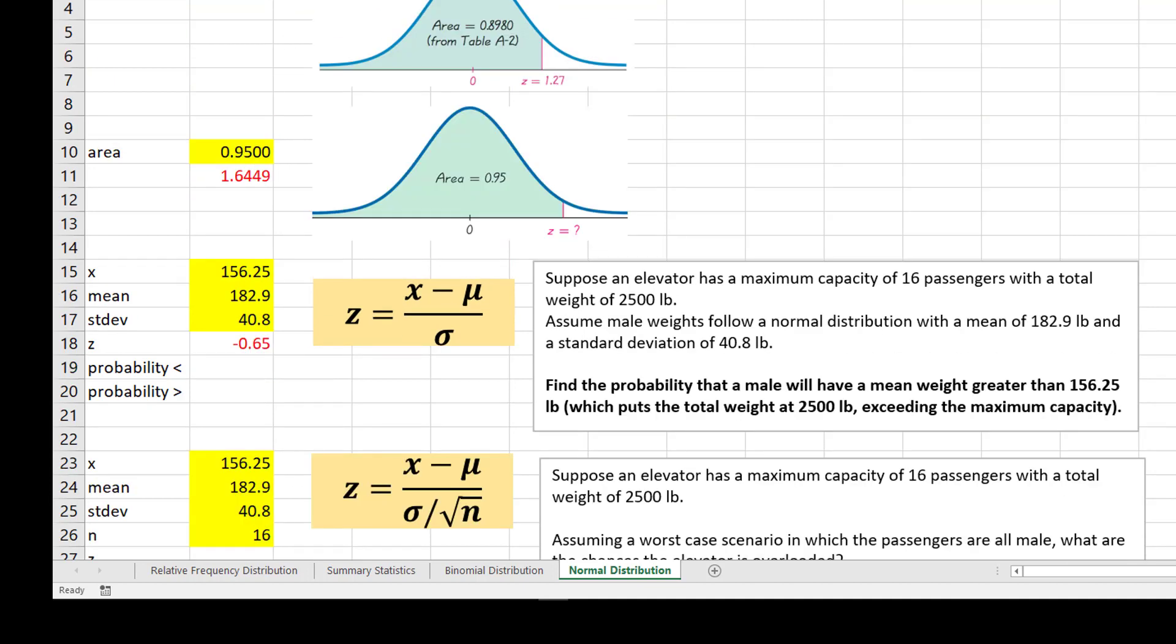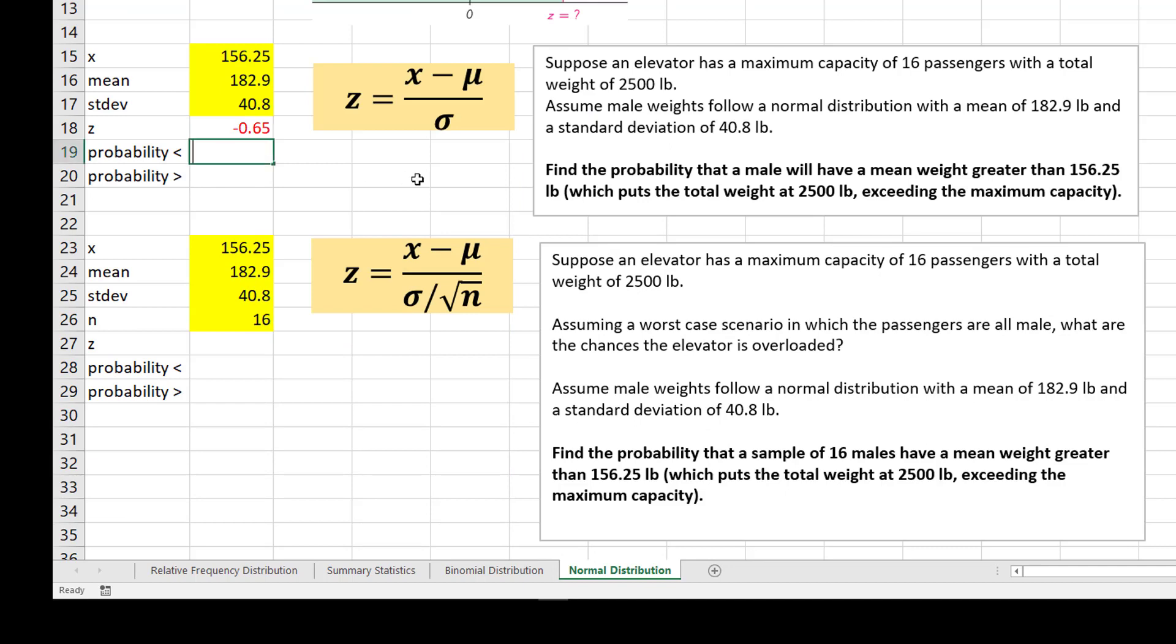Then I do the same thing that I did up here to find my probabilities. This would be NORM.S.DIST. I'd use my Z and I would say true. And in this case, I am going to do just one minus that value since I do have the greater than there as well.